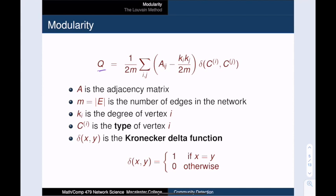All right. m is the total number of edges. So 2m is just the sum of the degrees in the network. Meanwhile, k_i and k_j are just the degrees of the vertices i and j. And this brings us to our new symbols, c_i and c_j, and of course, delta.